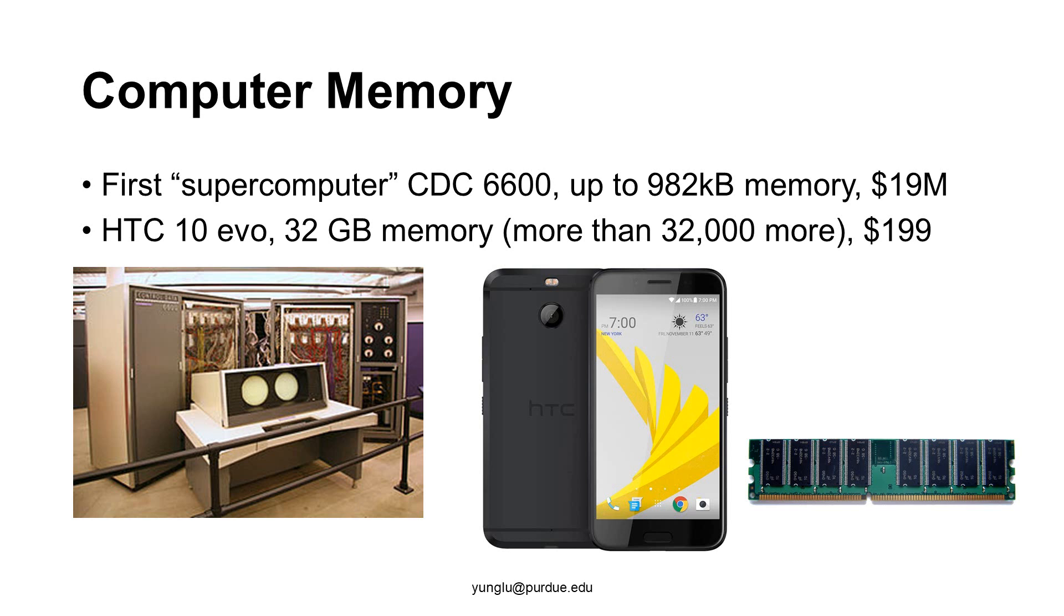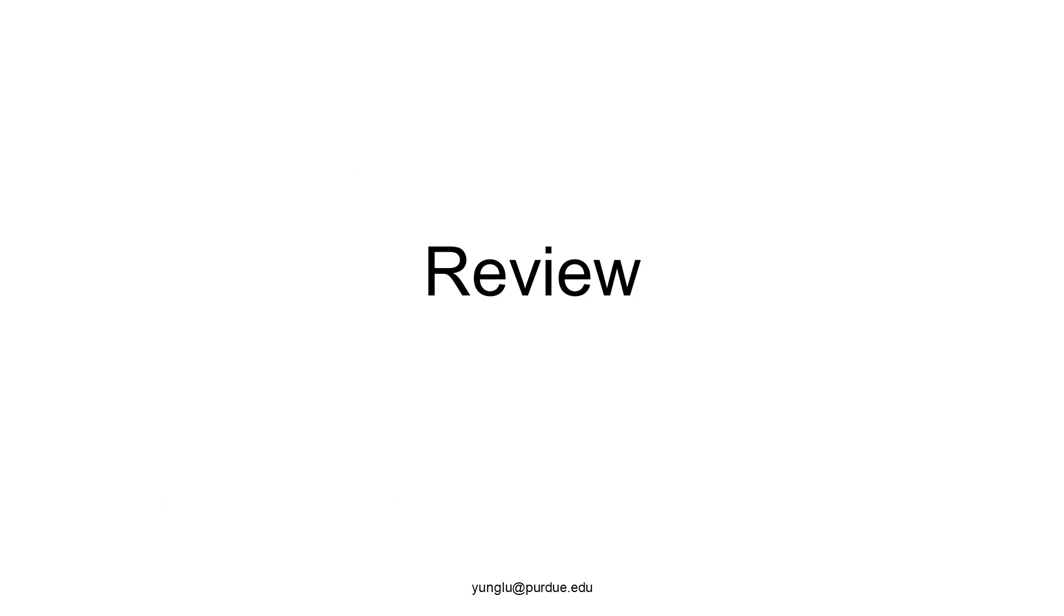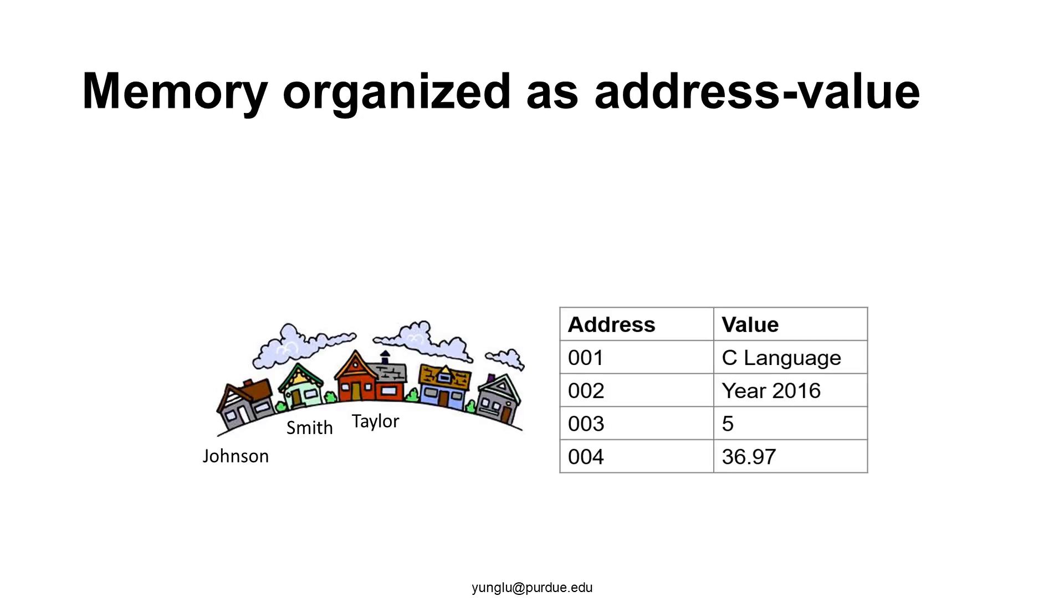You can imagine the tremendous progress in technology. Let's review the structure of memory in computers. Computer memory is organized in address-value pairs. Each row has an address and a value is stored at that address. You can think of the addresses in computer memory as the addresses of houses, and the values are the names of the families living in the houses.